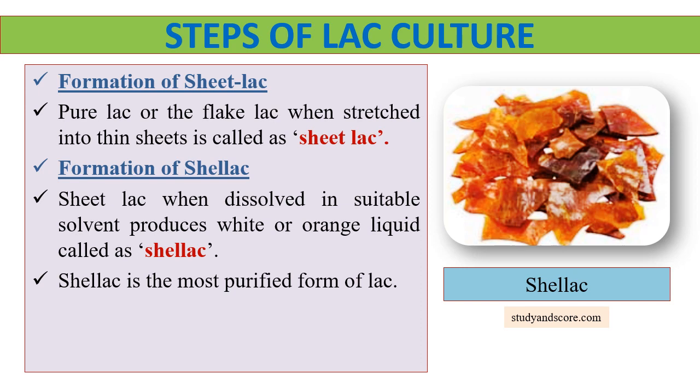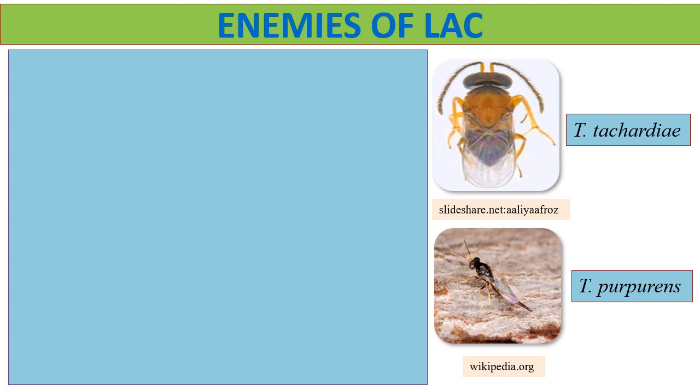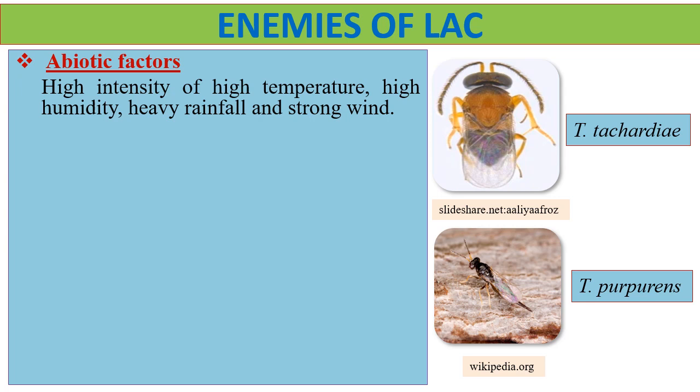Next, we have enemies of lac. Lac culture is subject to both biotic and abiotic factors. Abiotic factors include high temperature, high humidity, heavy rainfall and strong wind. Under biotic factors, we have insect enemies, which can be categorized as parasites and predators.